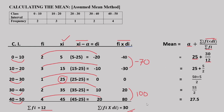Summation of fi·di equals negative 40 minus 30 plus 0 plus 20 plus 80, which gives 30. Summation of fi is 12.